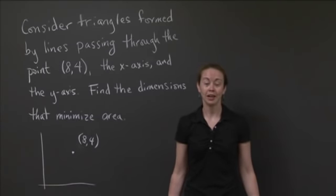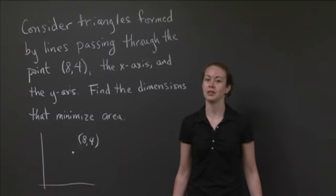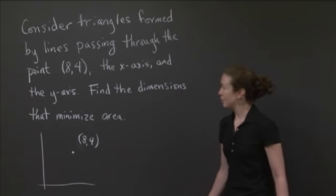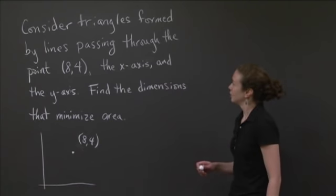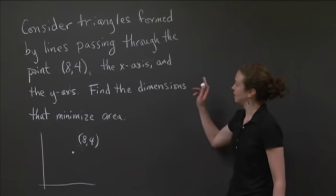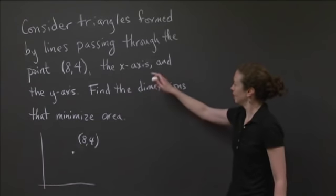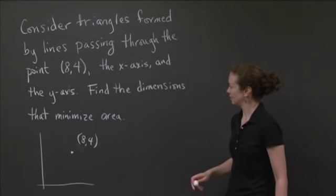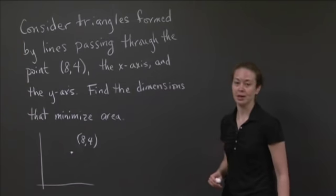Welcome back to recitation. In this video, we'd like to do another optimization problem. This one's a little bit harder than the distance problem. The question is the following: Consider triangles formed by lines passing through the point (8,4), the x-axis, and the y-axis. Find the dimensions that minimize area.